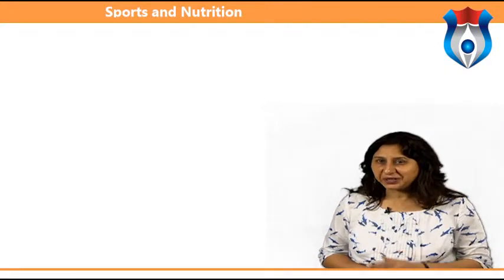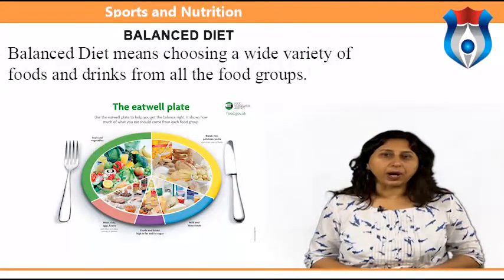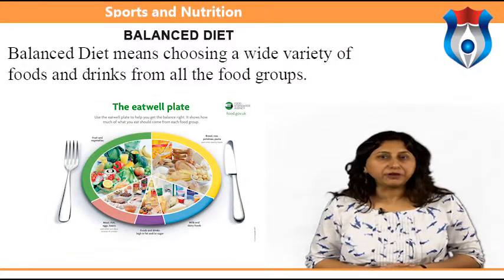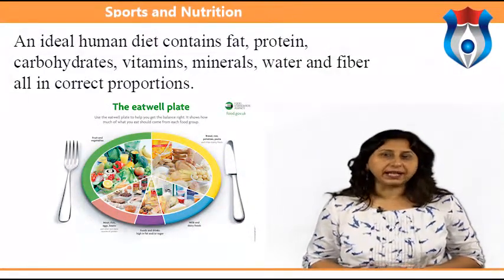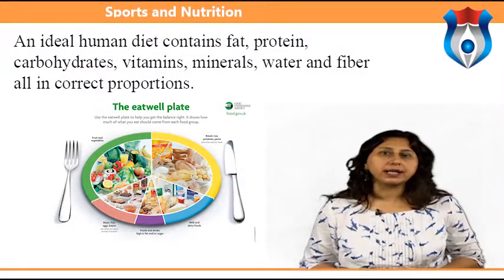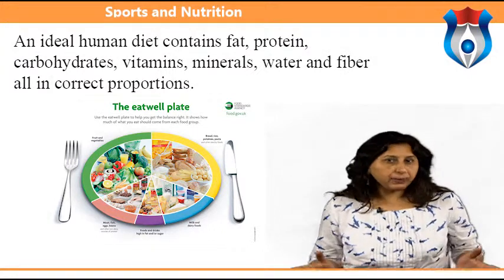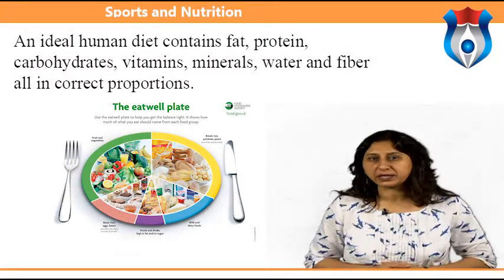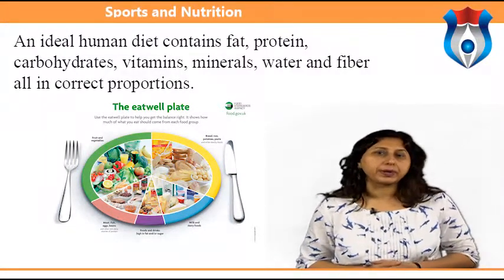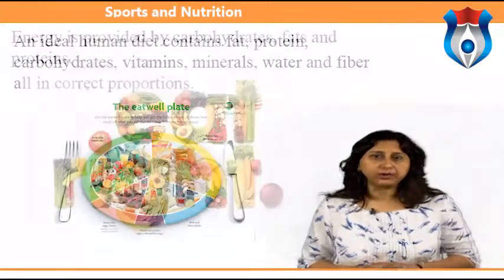Let's start with the concept of balanced diet. A balanced diet is one that provides an adequate intake of energy and nutrients for maintenance of the body and therefore good health. An ideal human diet contains fat, protein, carbohydrates, vitamins, minerals, water and fiber all in correct proportions. These proportions vary for each individual because everyone has different metabolic rates and levels of activity. Malnutrition results from an unbalanced diet.